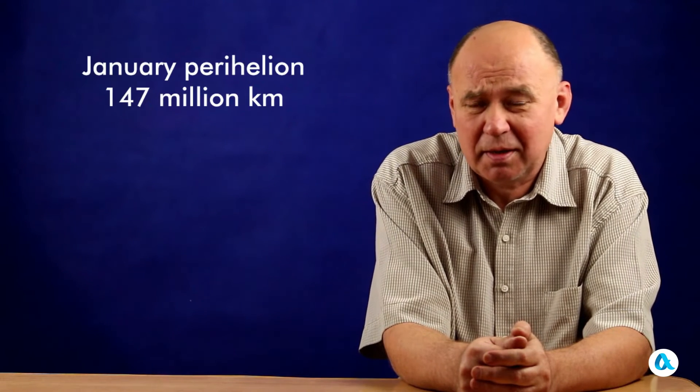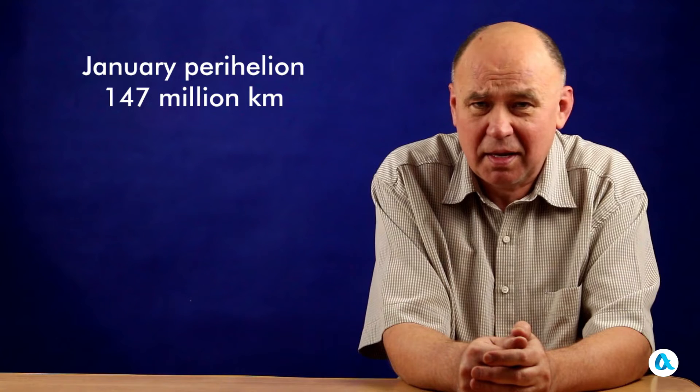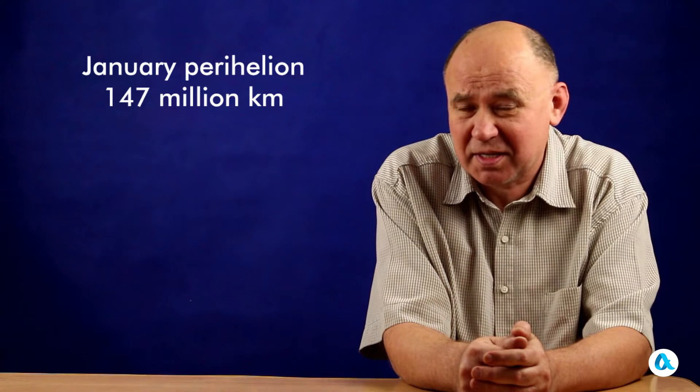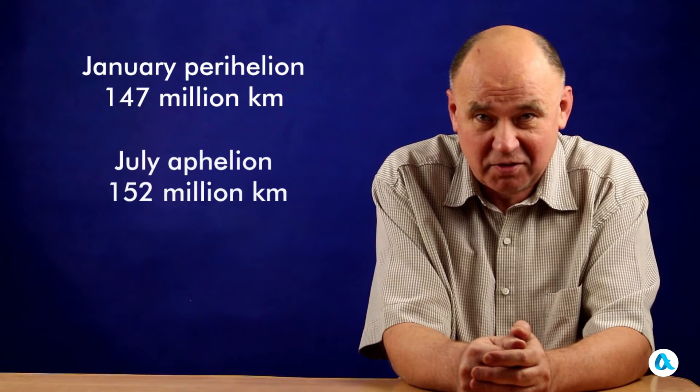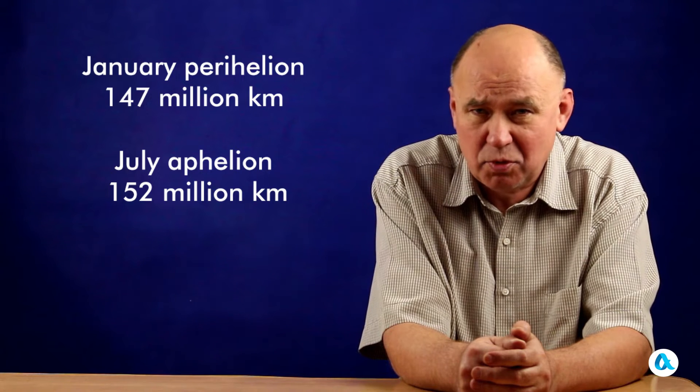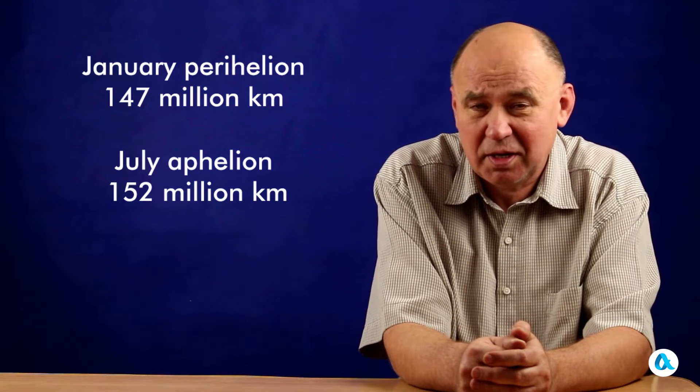However, this is a resolute falsehood because Earth is closest to the Sun at the beginning of January. In perihelion, it approaches the Sun at 147 million kilometers, while at the beginning of July in aphelion, it moves away at 152 million kilometers.